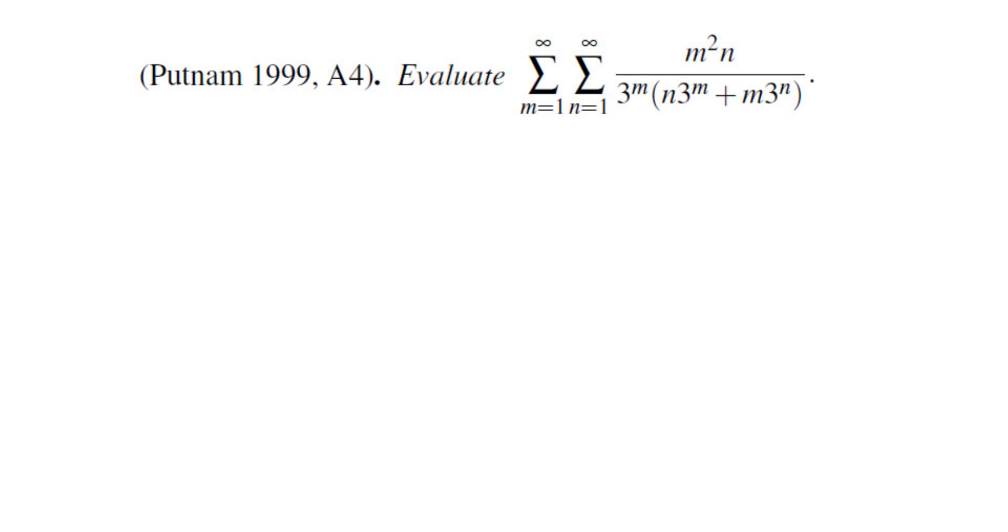Generally if I want to find a double sum or a single sum, there are several strategies that I can employ in solving a problem like this. The first one is using geometric and arithmetic sums. Those are things that sometimes you can relate a double sum to products of two geometric sums and things of that sort.